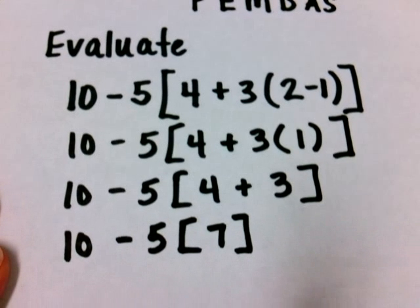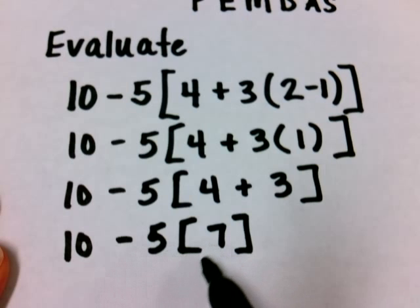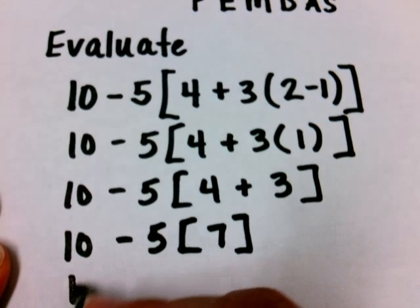We don't have any exponents, so we'll skip that step and next go to our multiplication we see here. 5 times 7 would give me 35.